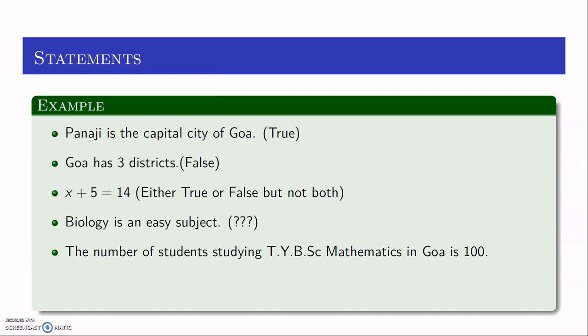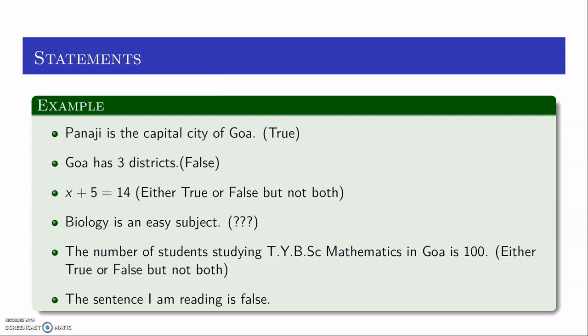I will count all the students who are studying third year BSc Mathematics in Goa and check whether the total number of students is 100 or not. If it is 100 then this sentence is true; if it is not 100 then it is false. So exactly one of either true or false has to happen — this sentence is either true or false but it cannot be both.